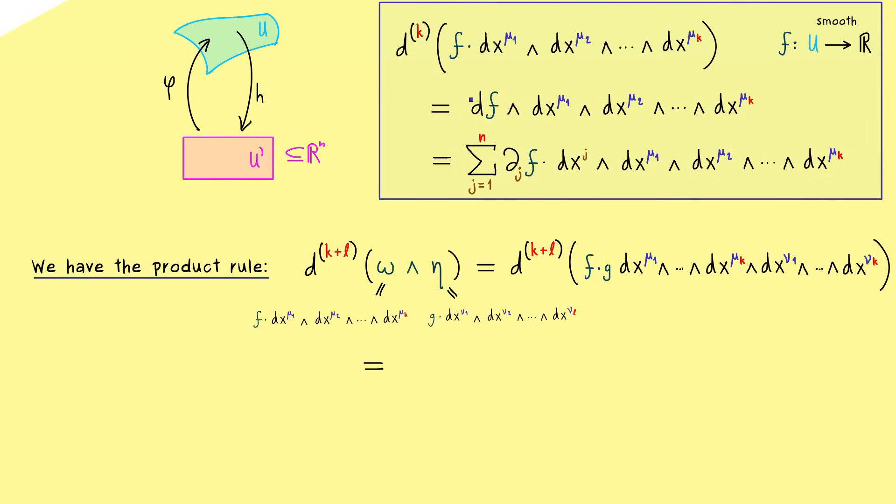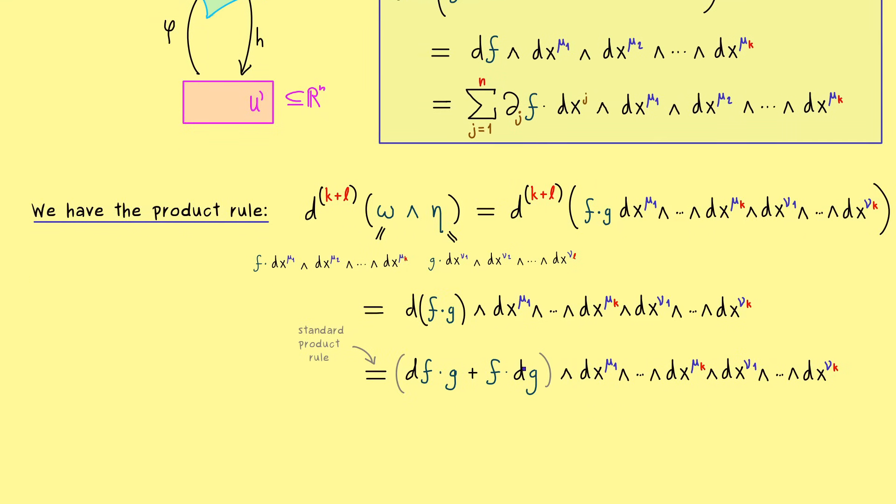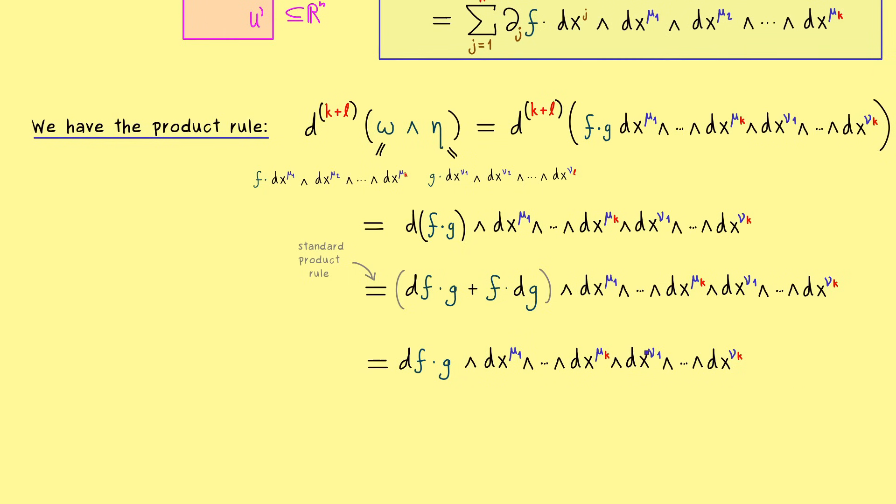This already tells us that in the first step we can put f and g together at the front, so we have the product f times g and then all the one-forms together. This is our k+l form and now we can apply our d to it, which simply means we just have the differential of f times g. Obviously there we already know the product rule - it's the standard product rule like we have it for Jacobians. It's just df times g plus f times dg. We can distribute this wedge to both terms in the sum, so there we have the first part plus the second part.